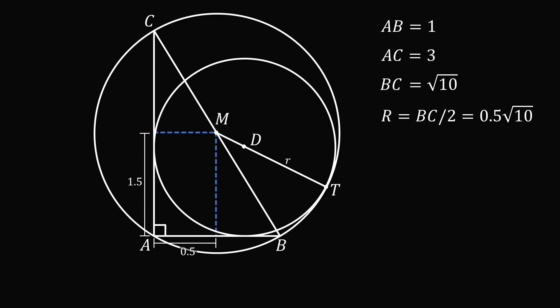Then, MT is the radius of the circumcircle, so we know its radius is equal to 0.5 multiplied by the square root of 10. So MD will be the difference of the radii, so MD will be equal to 0.5 multiplied by the square root of 10 minus R.